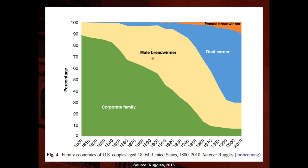The male breadwinner family type increased in the early 1900s, with the woman doing more household activities. Then in the late 1900s and 2000s, there is a huge increase in dual-earner families, in which both the father and the mother work outside the household, bringing earnings into the household for the family. This increase in dual-earner families is especially visible in the second half of the 1900s.